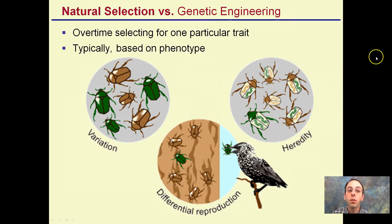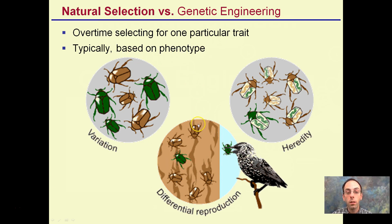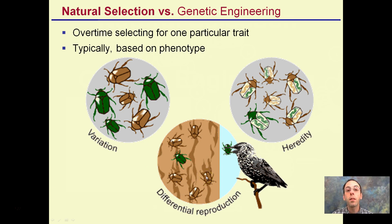Natural selection, over time, selects for one particular trait, typically based on the phenotype. Here we have birds eating the green bugs that stand out against the brown tree. The brown bugs are able to survive, and they're the ones that pass on the genes — they're naturally being selected for through the process of natural selection.